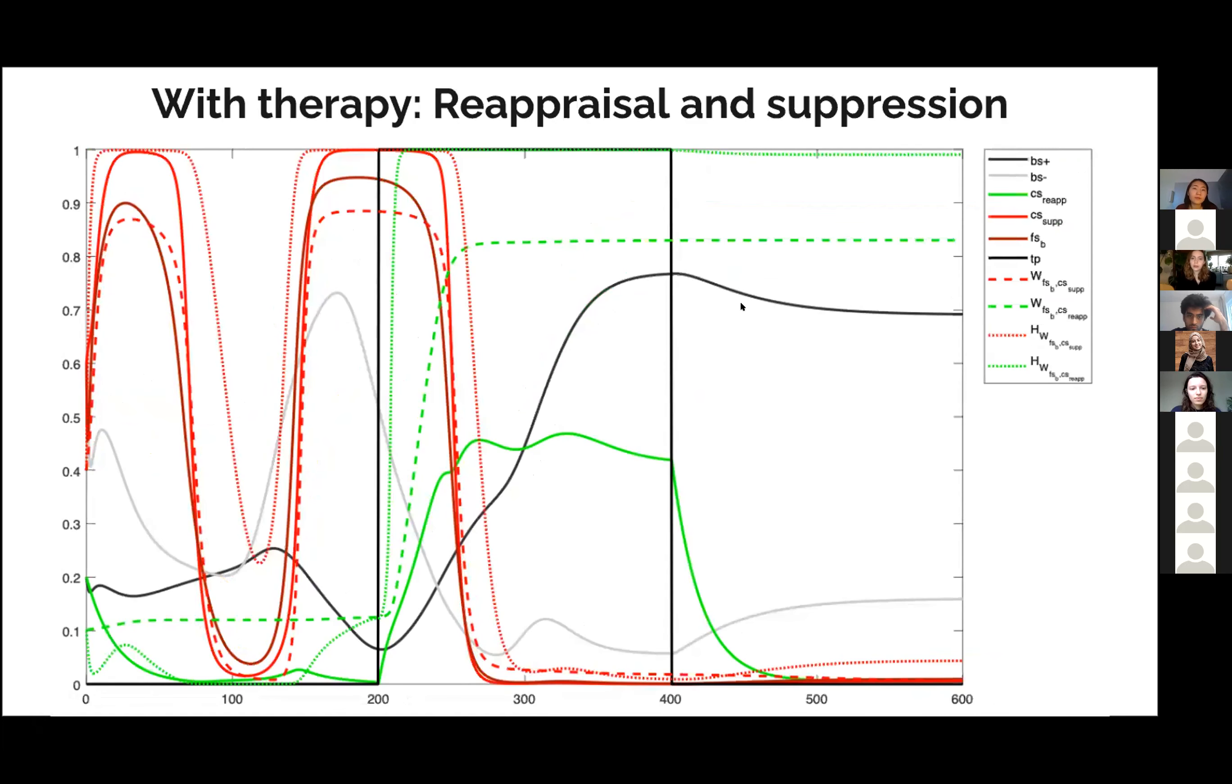And this is the reappraisal and suppression. The red line, that is the suppression of emotions and that goes down. This therapy makes the reappraisal work again. We see a little bit of an increase in this green line. But this increase is enough to get the plasticity and make the plasticity of reappraisal work again. So this person has a more healthy reappraisal emotion regulation.